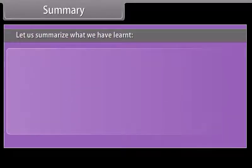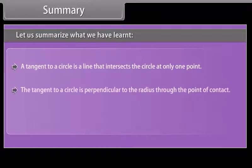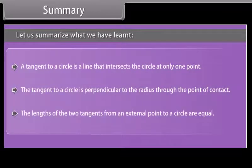Let us summarize what we have learned. A tangent to a circle is a line that intersects the circle at only one point. The tangent to a circle is perpendicular to the radius through the point of contact. The lengths of the two tangents from an external point to a circle are equal.